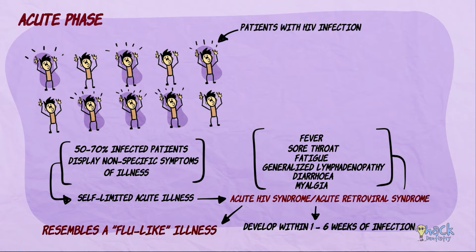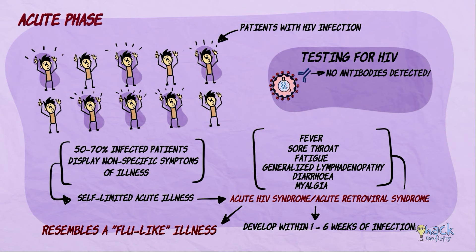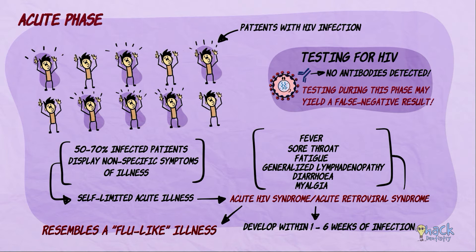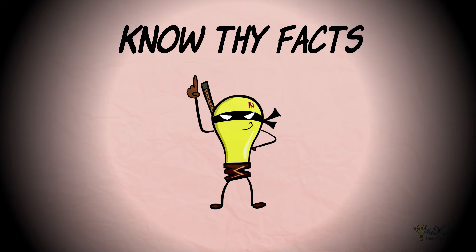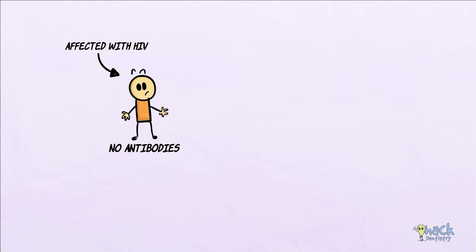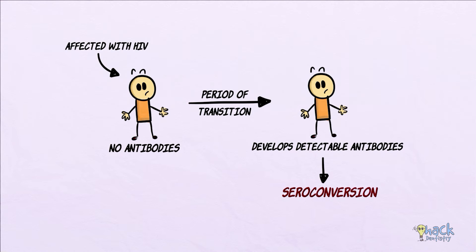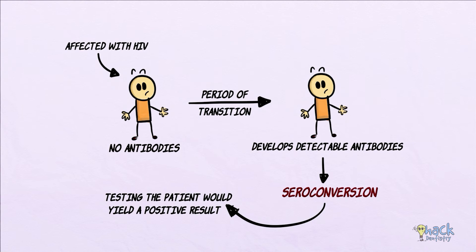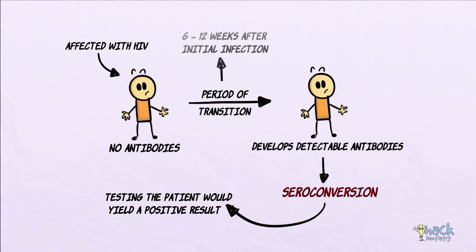In the acute phase, HIV antibodies may not be detected, and testing for HIV infection when there are no antibodies may yield a false negative result. The period of transition when the patient develops detectable antibodies towards HIV is called seroconversion. Testing a patient after seroconversion would yield a positive result, which may happen 6 to 12 weeks after initial infection.